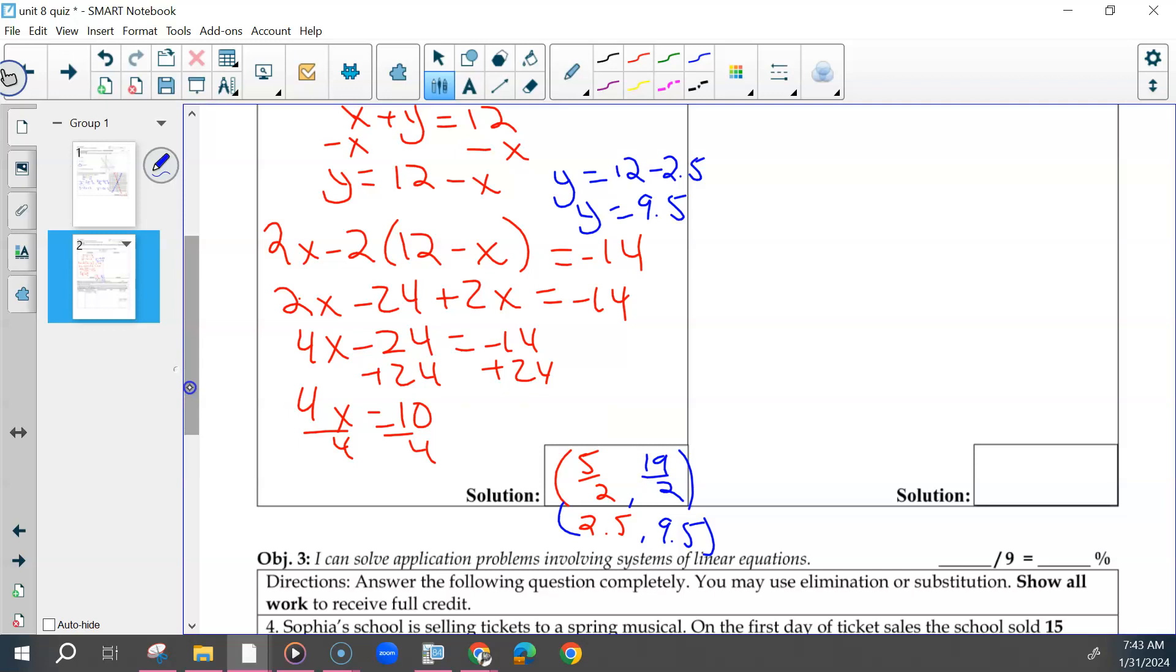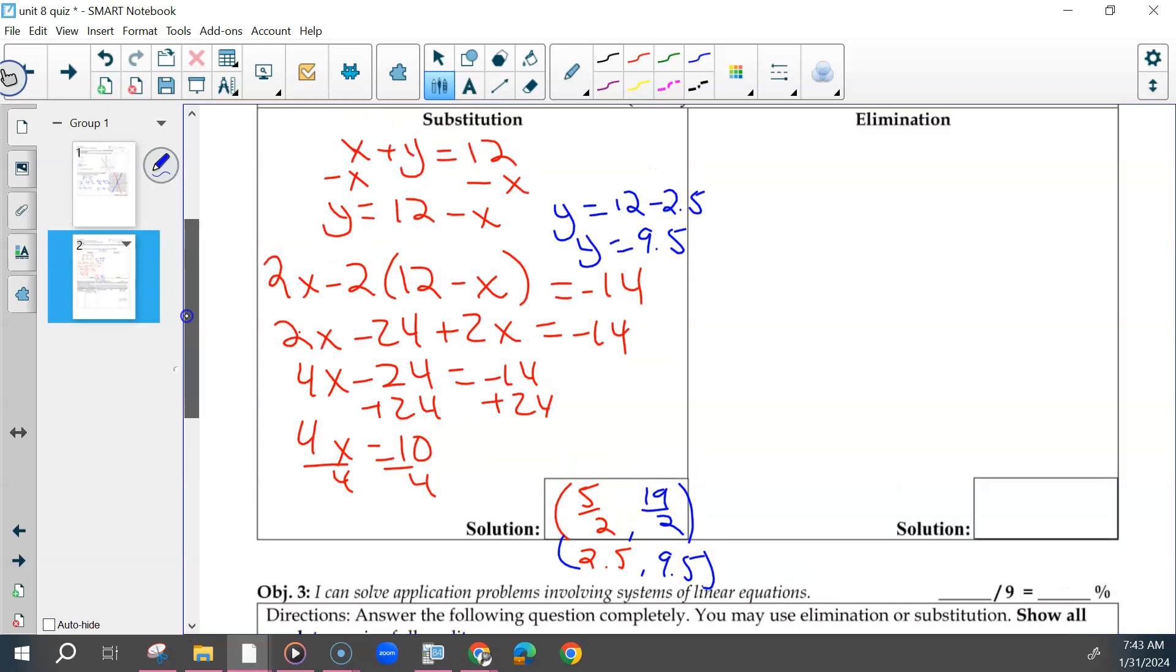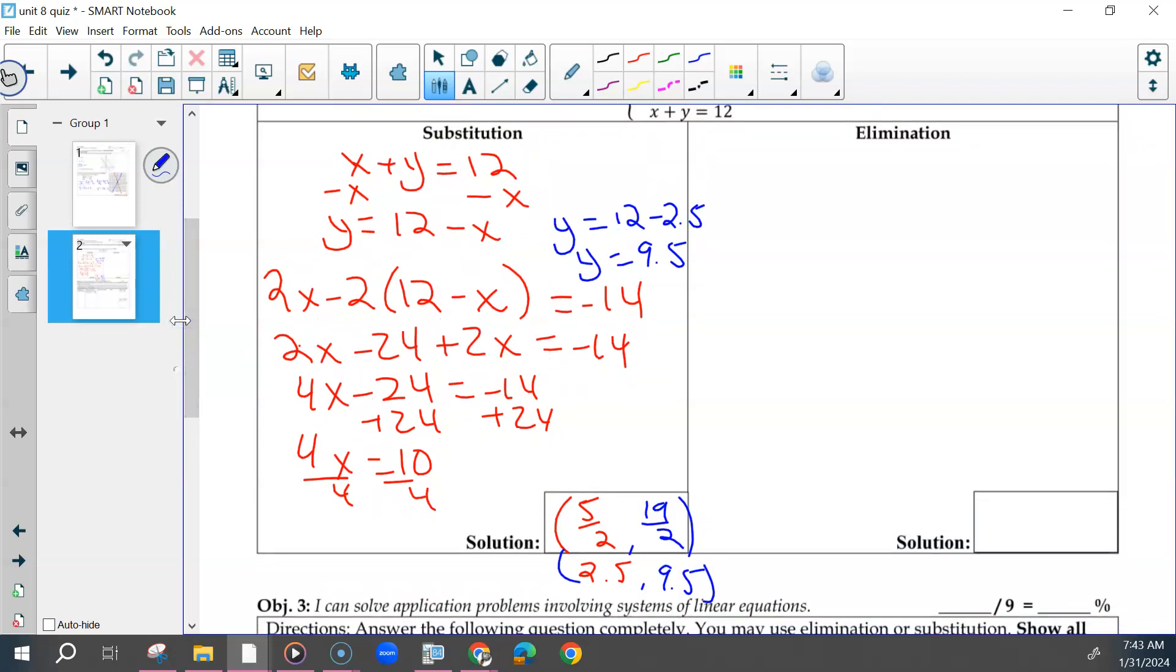So then the five points on this problem were however you set up your substitution, because there were multiple different ways. And then solving for one variable correctly, getting the correct x value, getting the correct y value, and the solution. Questions on anything substitution before we do elimination?